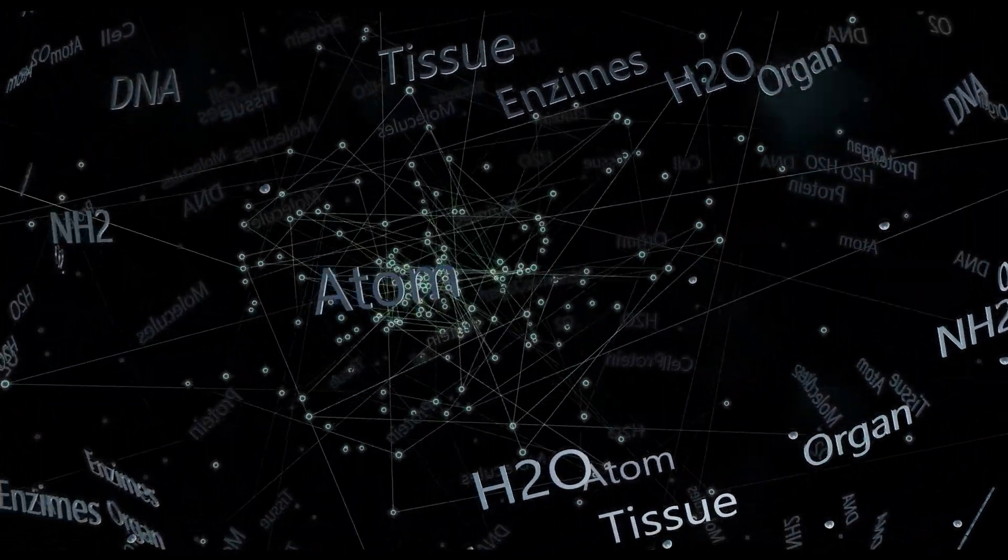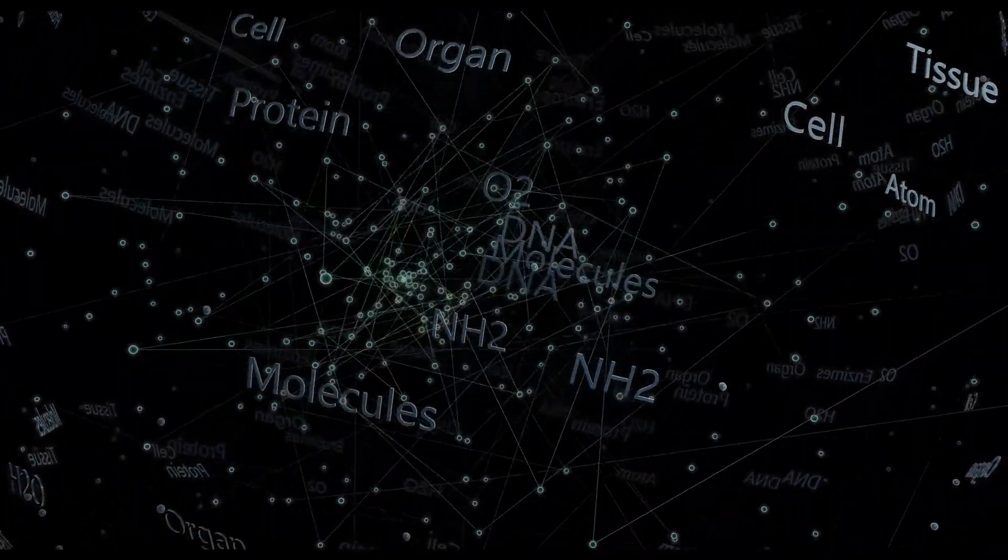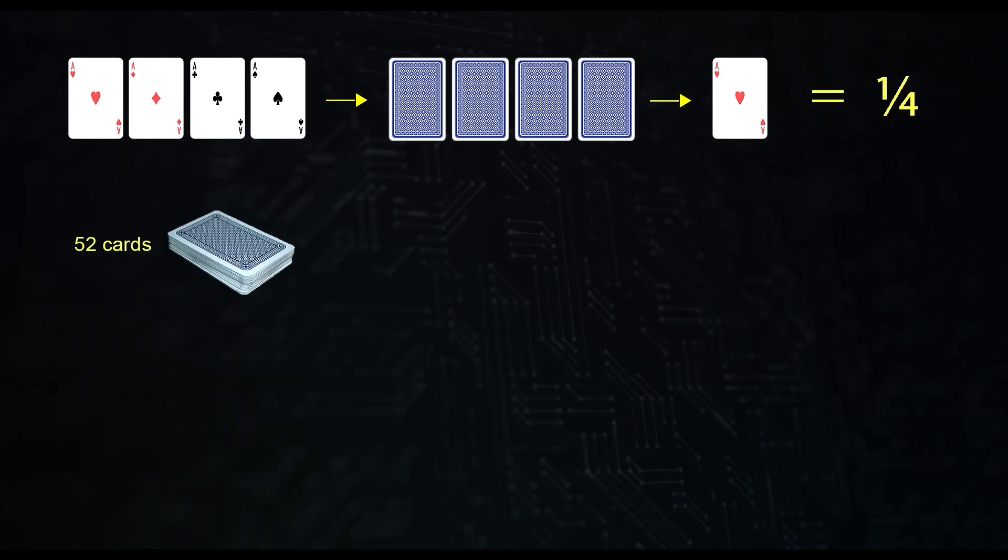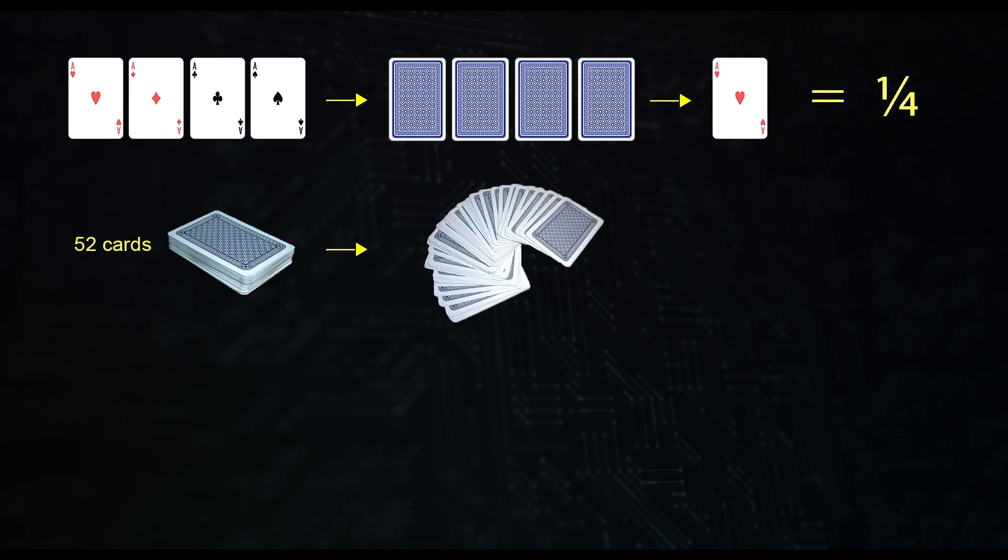It is a matter of probability. Let's consider four aces, randomly shuffled. If we want to draw the ace of hearts, we will have one chance in four of picking the right card through random selection. With 52 cards, the probability of drawing the ace of hearts will drop to 1 in 52.